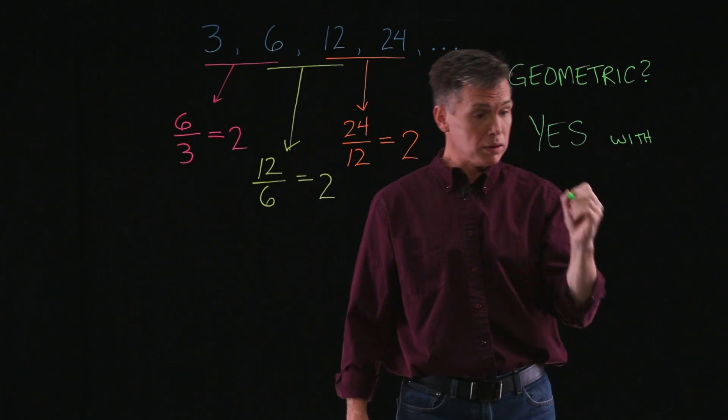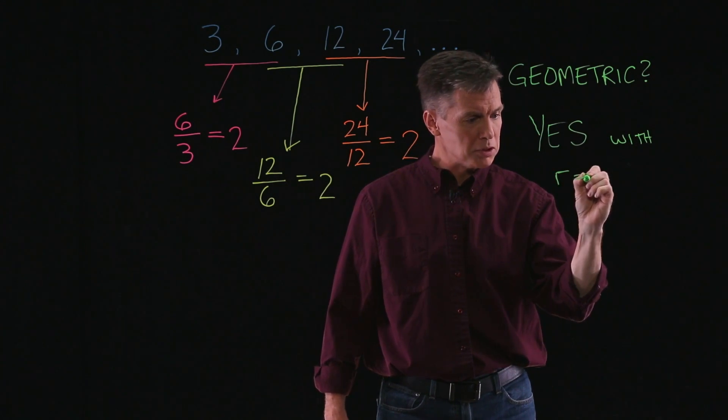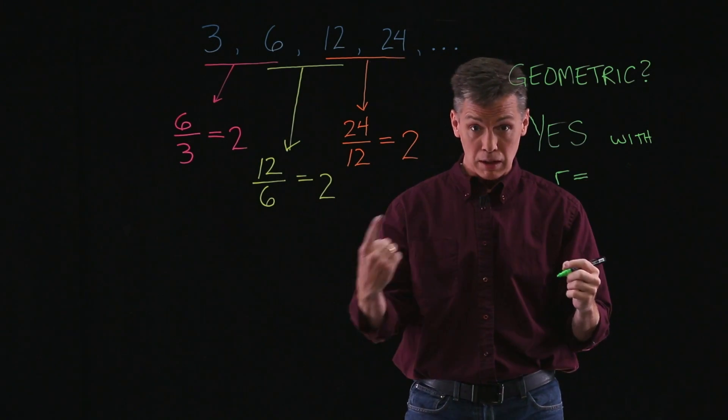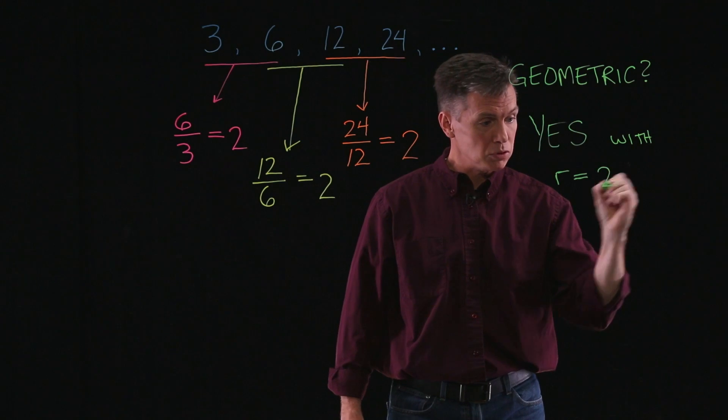So we'll say yes, it's geometric, with the common ratio, usually labeled with an r for ratio, is exactly that number that we got with each of the divisions. So r equals 2.